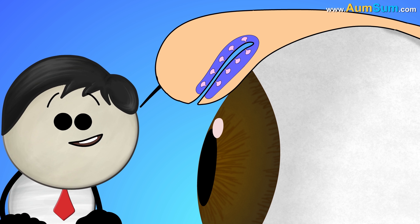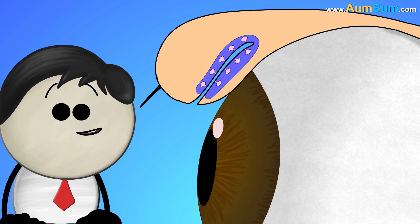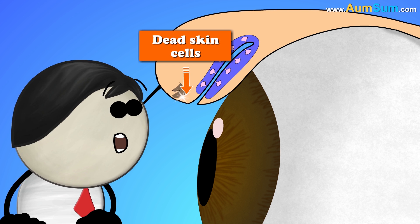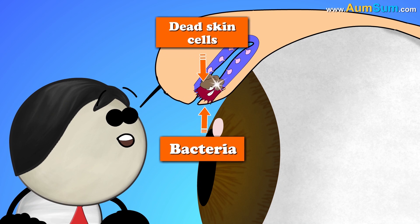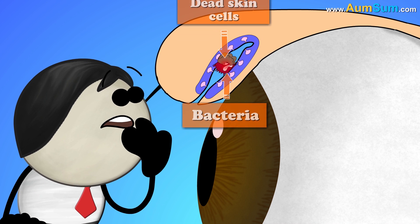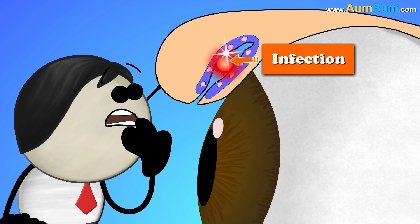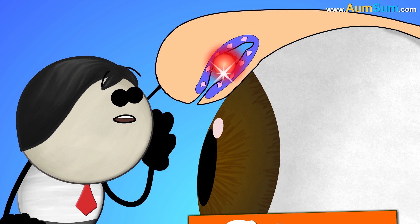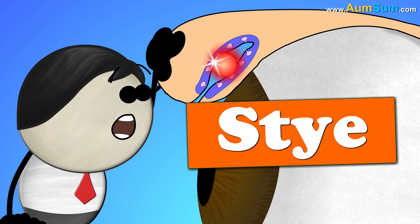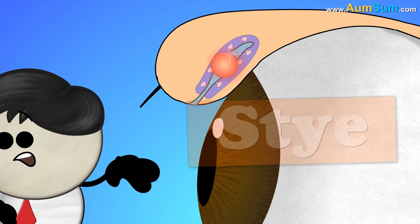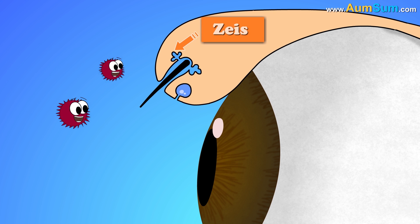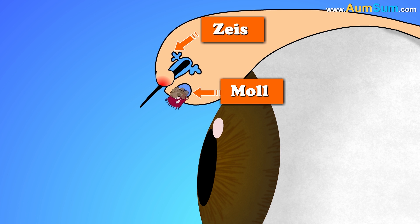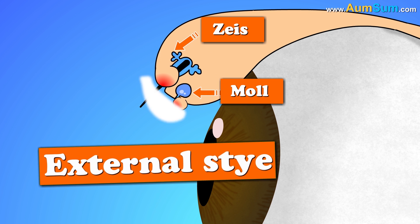Sometimes in the above glands, dead skin cells and bacteria get trapped, leading to an infection, thus giving rise to a sty. If infection occurs in the Glands of Zeiss or Mull, it is called an external sty.